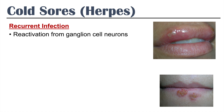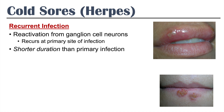Recurrent infection is due to reactivation of the herpes simplex virus from the ganglion cell neurons, and it recurs at the primary site of infection — wherever you had that site of inoculation the first time. The good news about the recurrent infection is that its duration is shorter than the primary infection, generally lasting around five days.